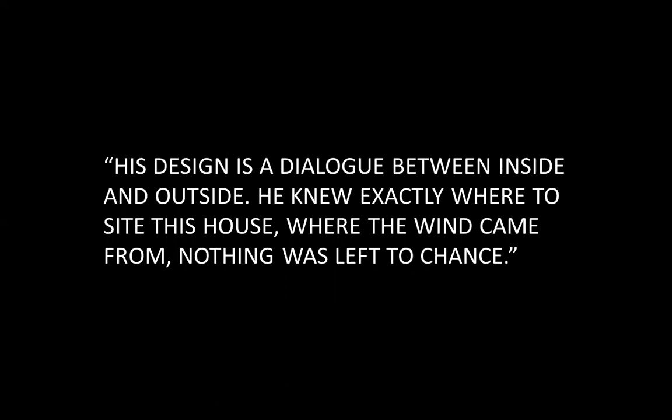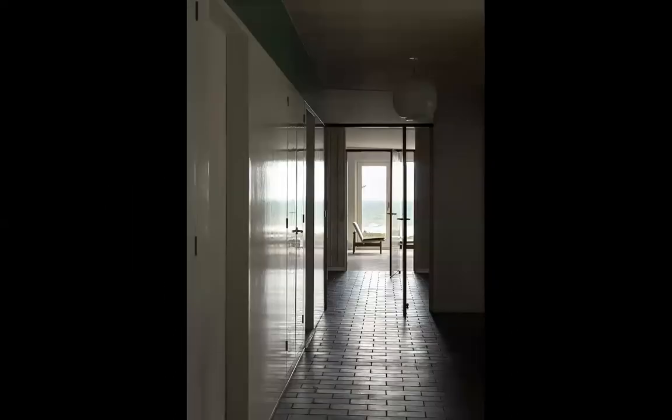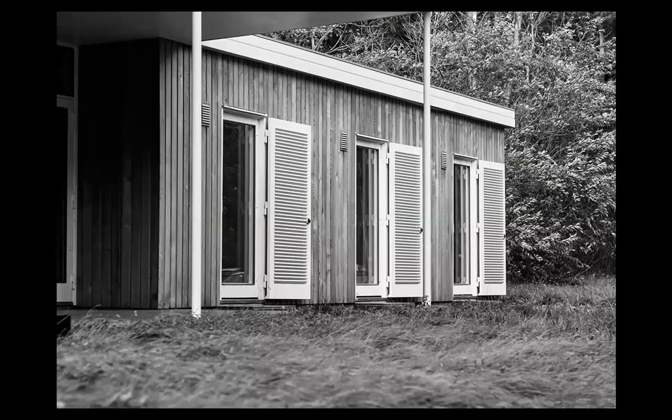His design is a dialogue between inside and outside. He knew exactly where to site this house, where the wind came from, nothing was left to chance. Maybe we can call his approach a lyrical functionalism or a functional lyricism. It is indeed very nice. It is possible with simple means to do a lot. The truth is we can make quality architecture also with the T-square and the rectangle. It's possible — and we have an example right here.